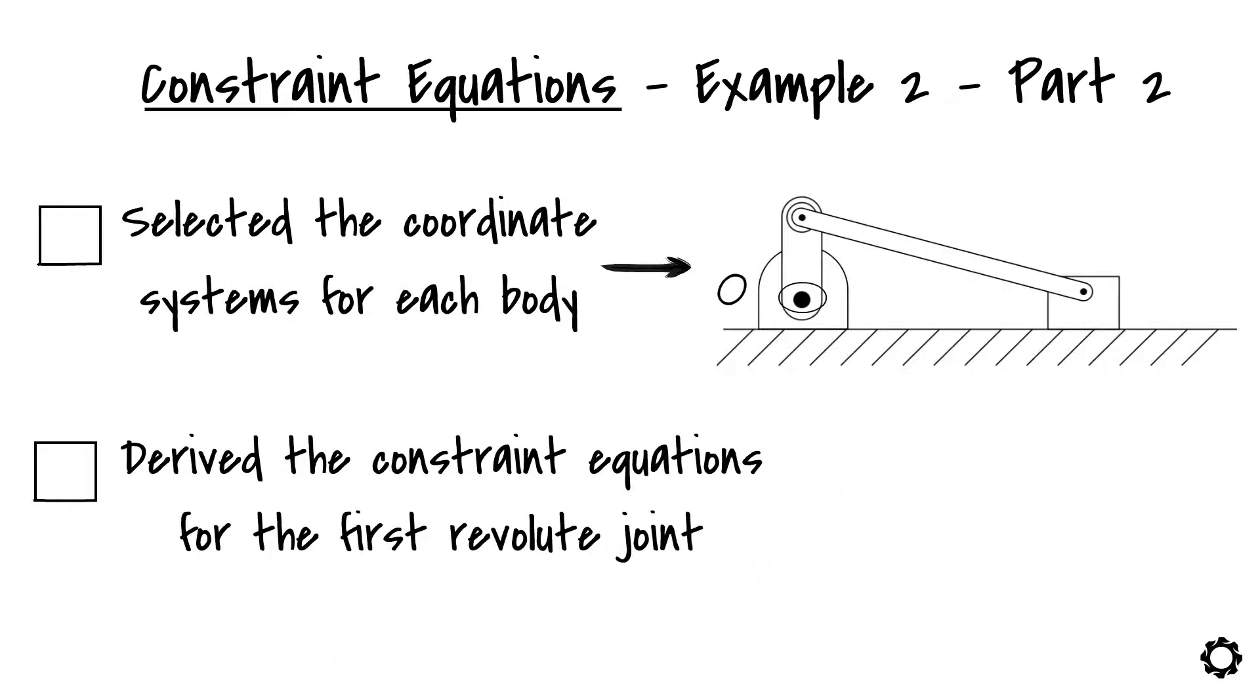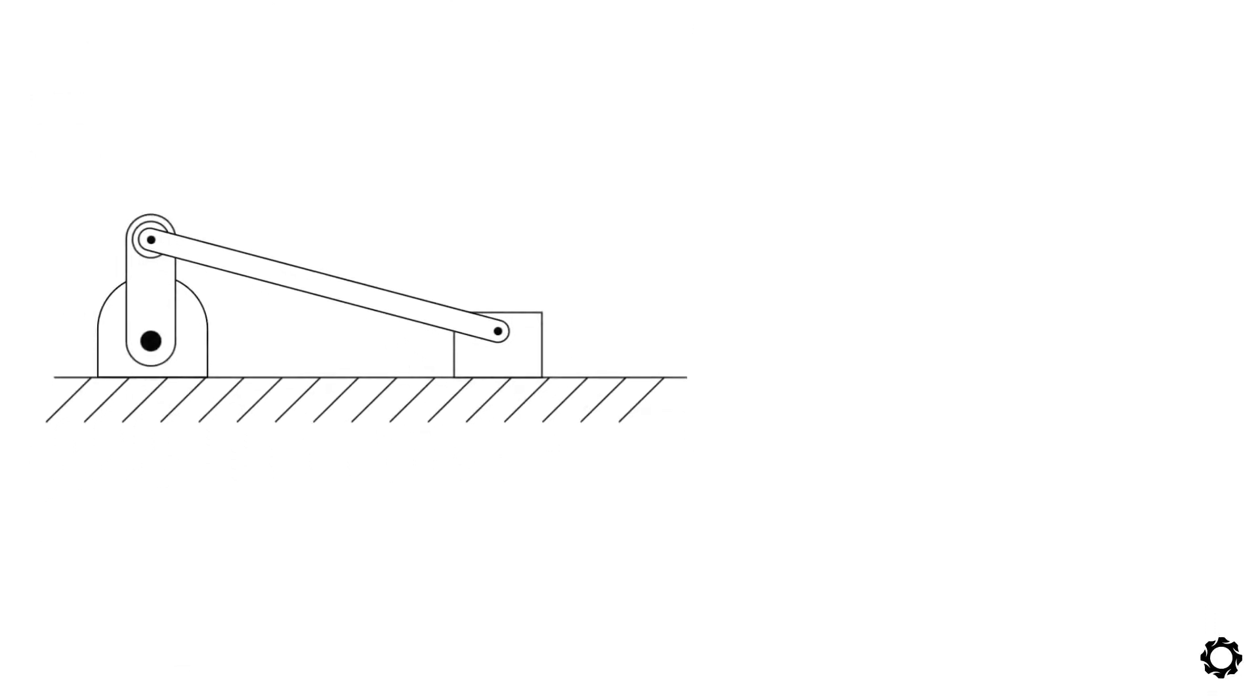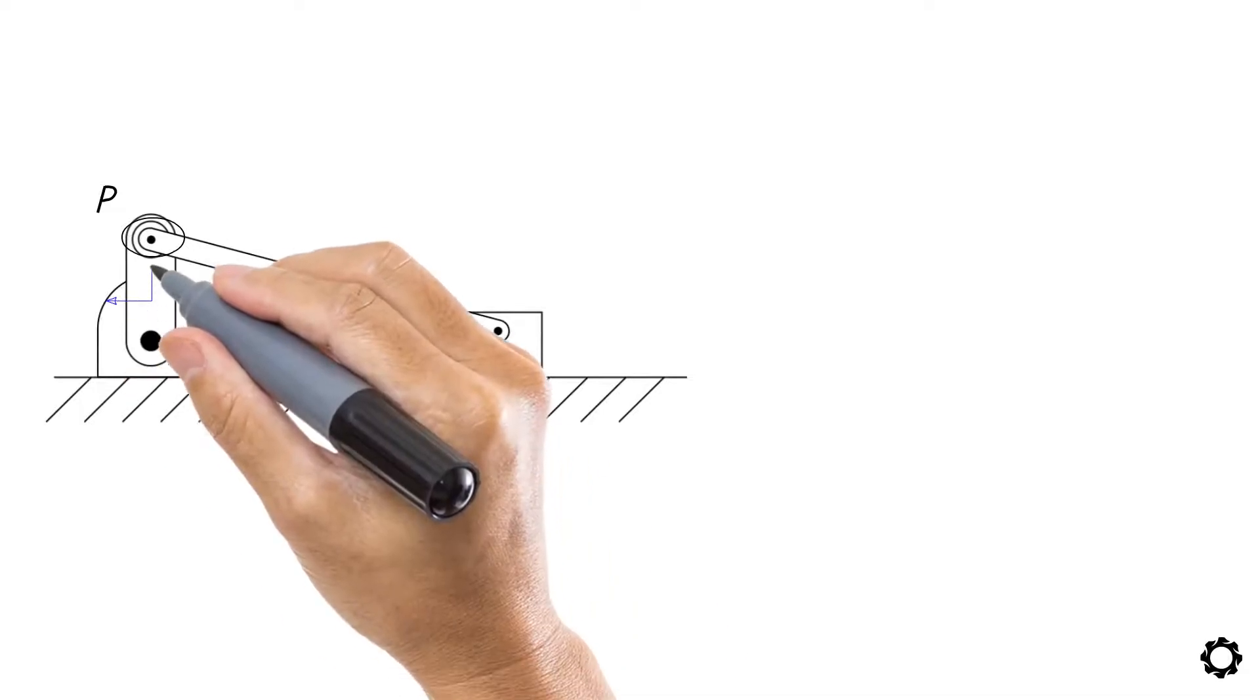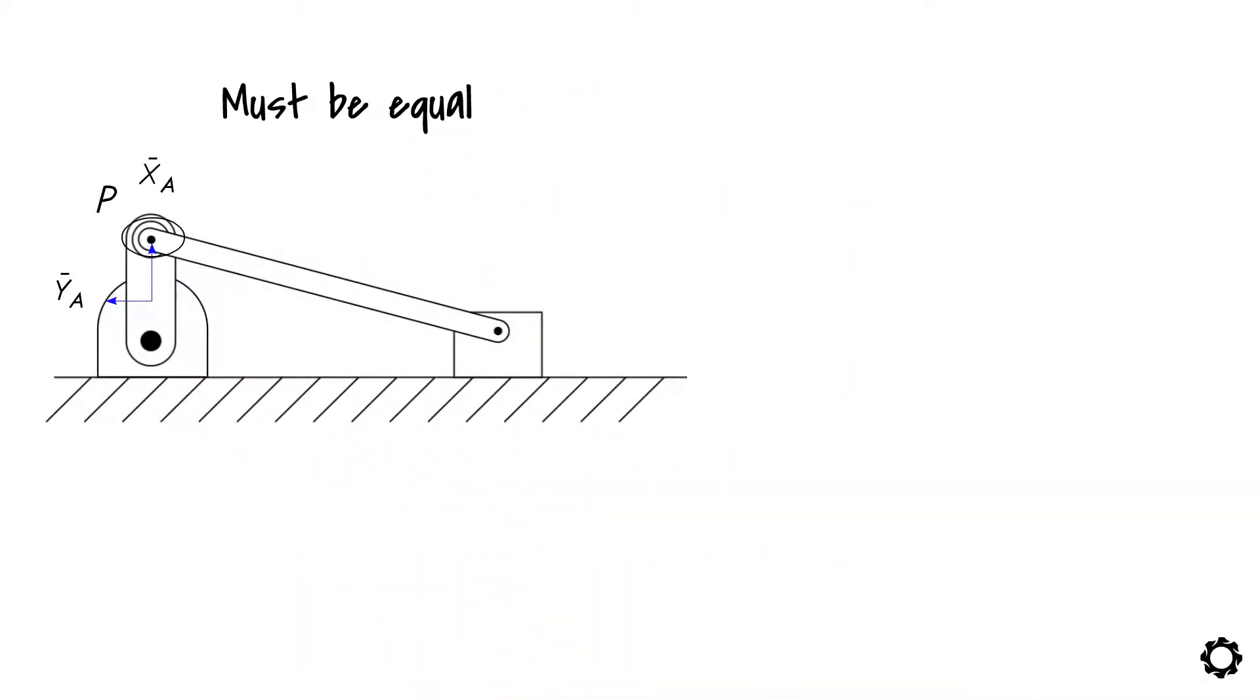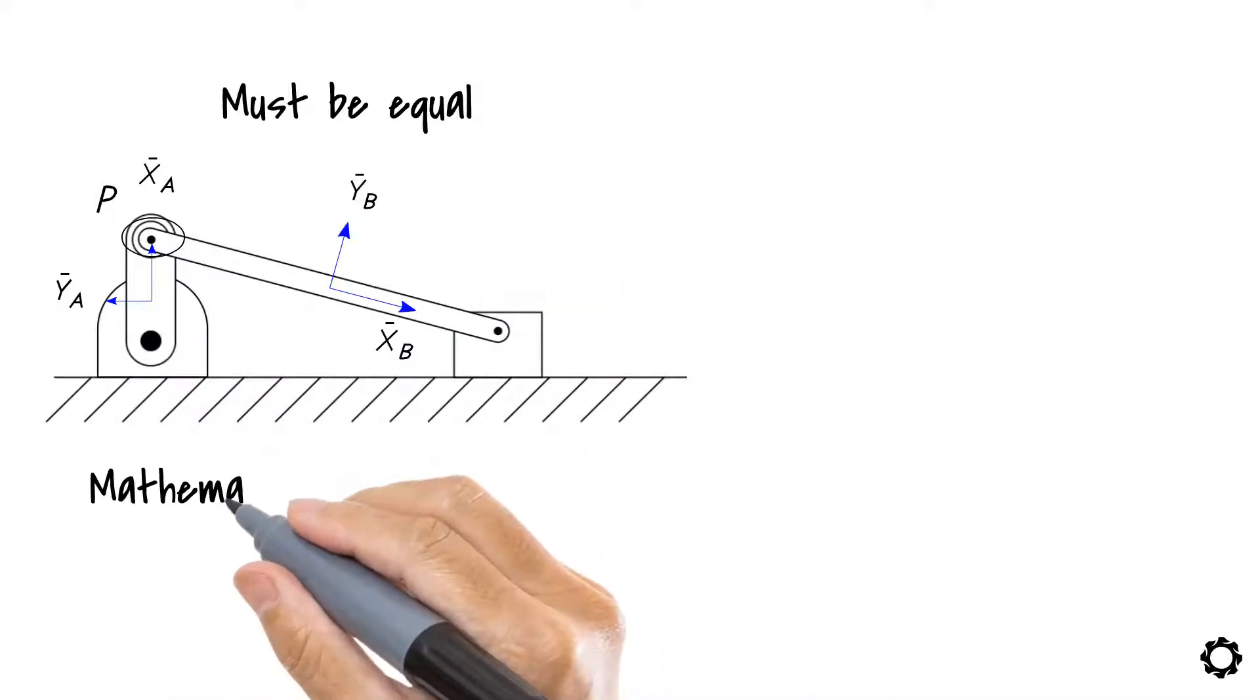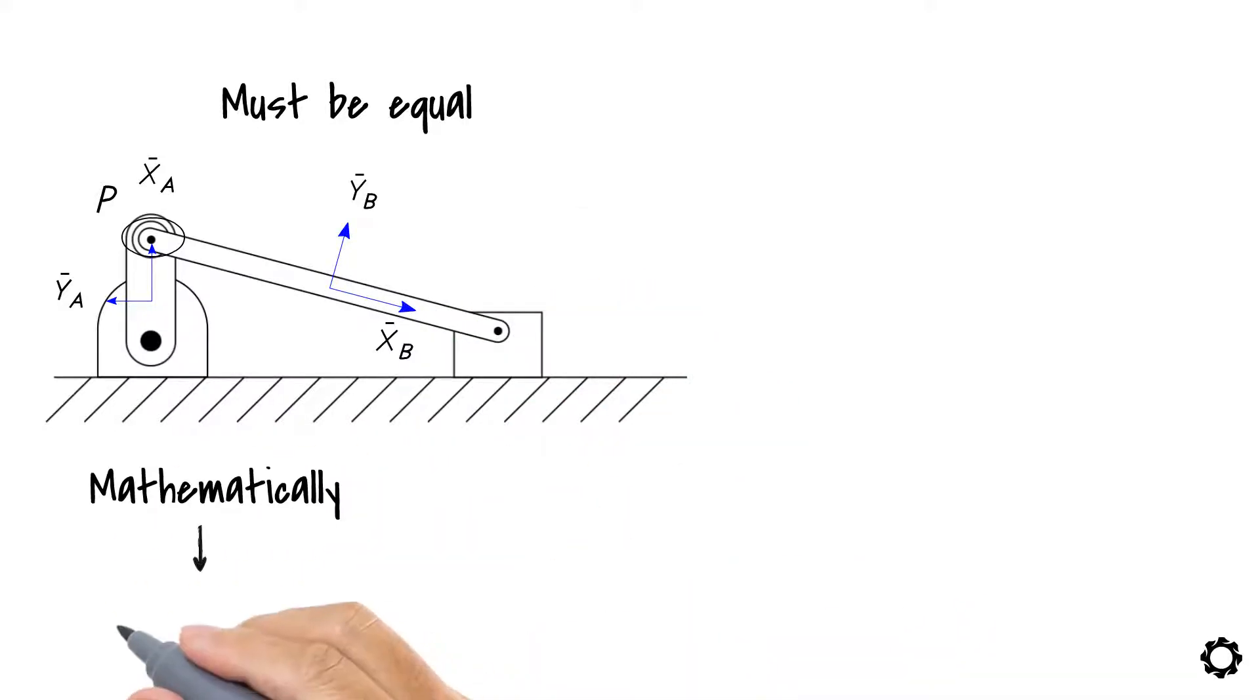The same procedure is followed in the case of the revolute joint between the crank and the shaft. Point P, defined via the crank-attached reference system, must be equal if it is defined via the shaft-attached reference system. Mathematically, it looks like RAP equals RBP. RA plus AA U-bar AP minus RB plus AB U-bar BP equals zero.